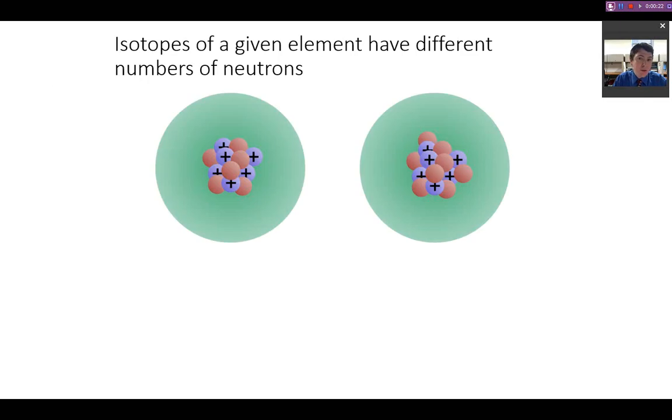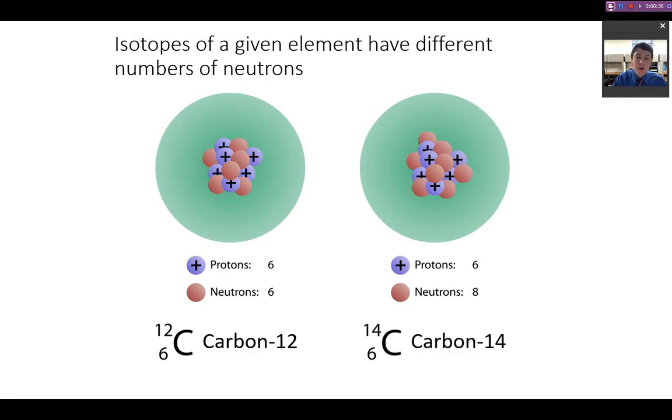So let's review and remind ourselves what an isotope is. Isotopes of a given element have the same number of protons, but different numbers of neutrons. Here, these are two different carbon atoms, so each has six protons. However, they have different numbers of neutrons, so the one on the left is carbon-12, the one on the right is carbon-14.